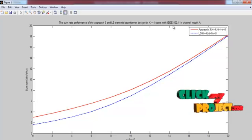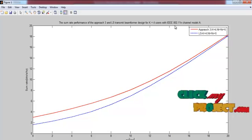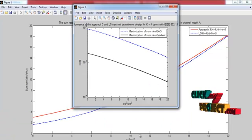four number of users are performed, and these beamforming methods are implemented in the IEEE 802.11n channel model. And this